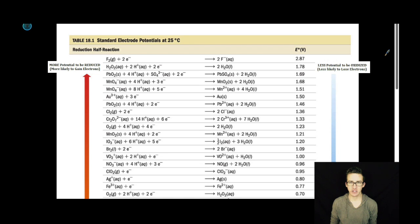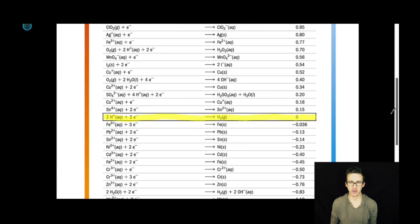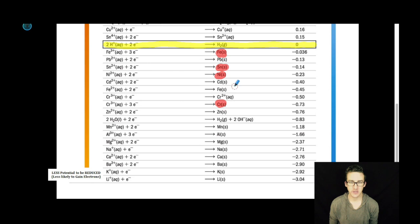So as I come to my reduction potential chart to find those metals, I've highlighted them for you here. Remember, this is the reduction potential chart, so here we see them on the right-hand side of the equation.